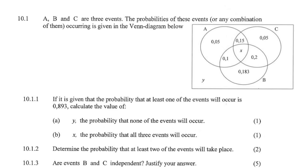A, B, and C are three events. The probabilities of these events occurring is given in the Venn diagram below. If it is given that the probability that at least one of the events will occur is 0.893, calculate the value of Y.